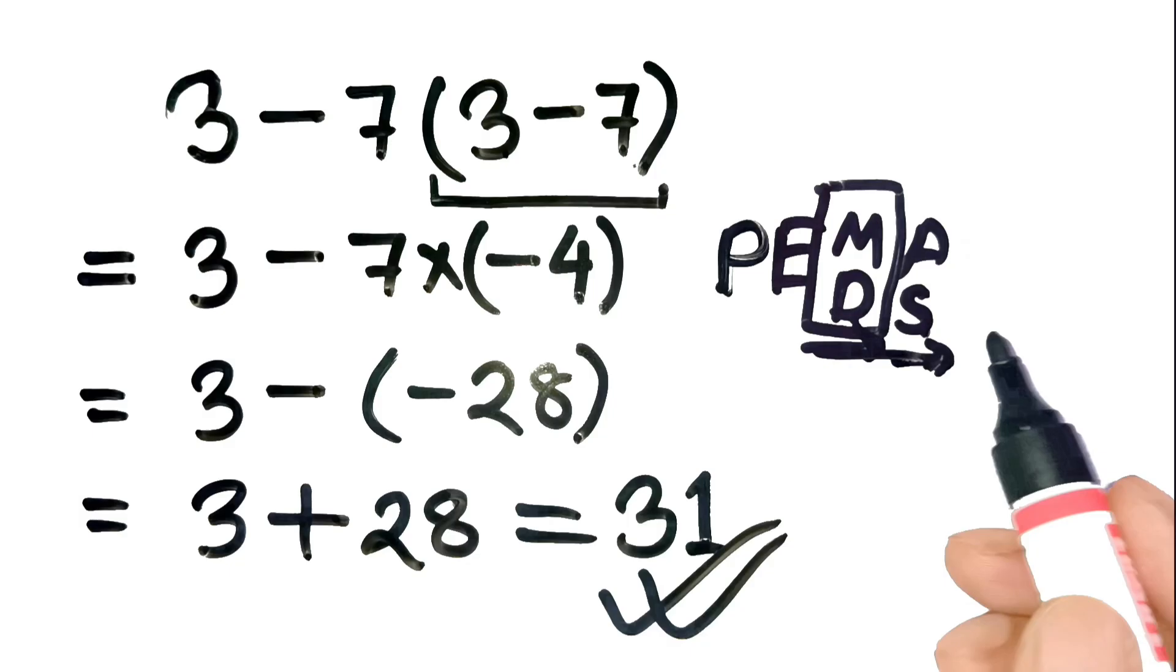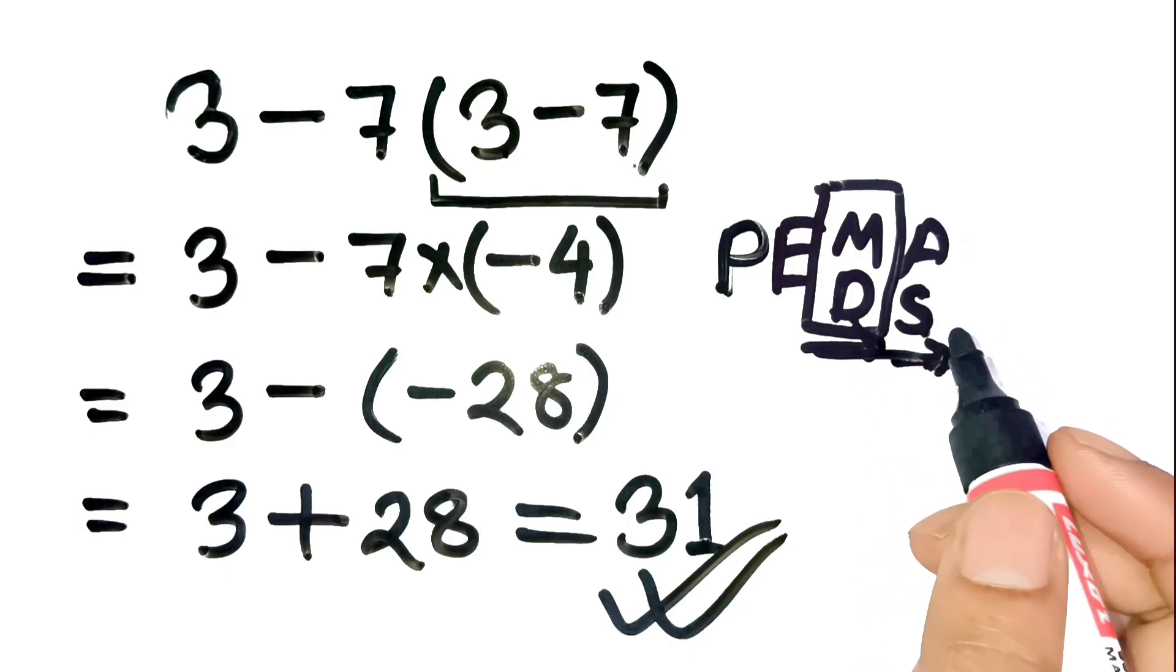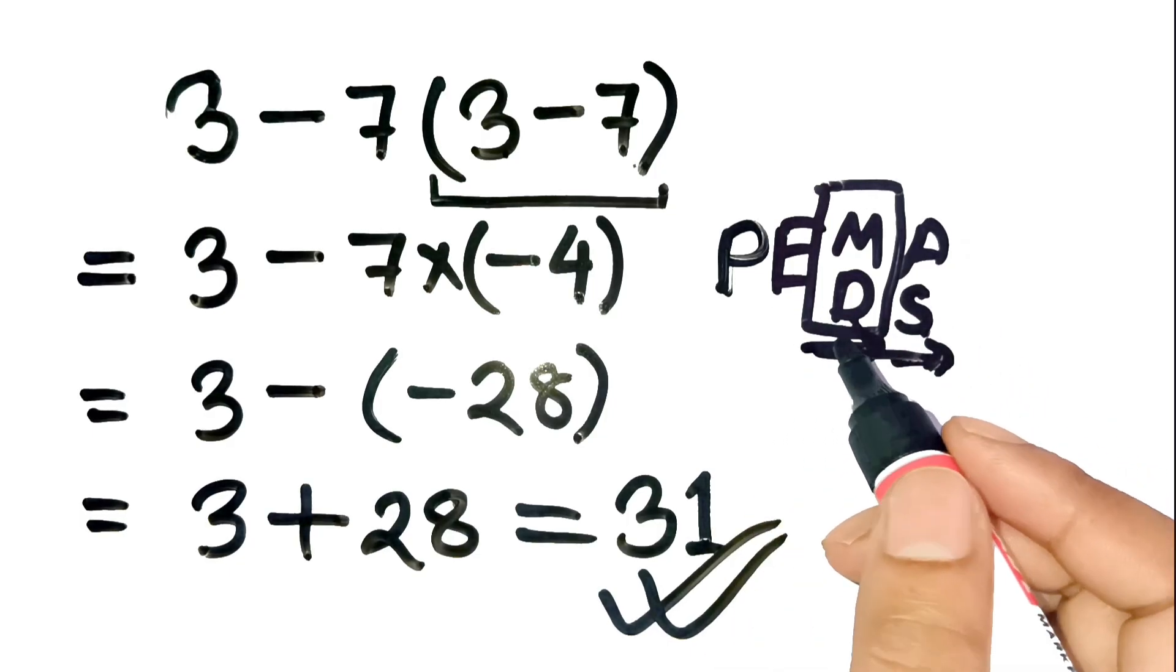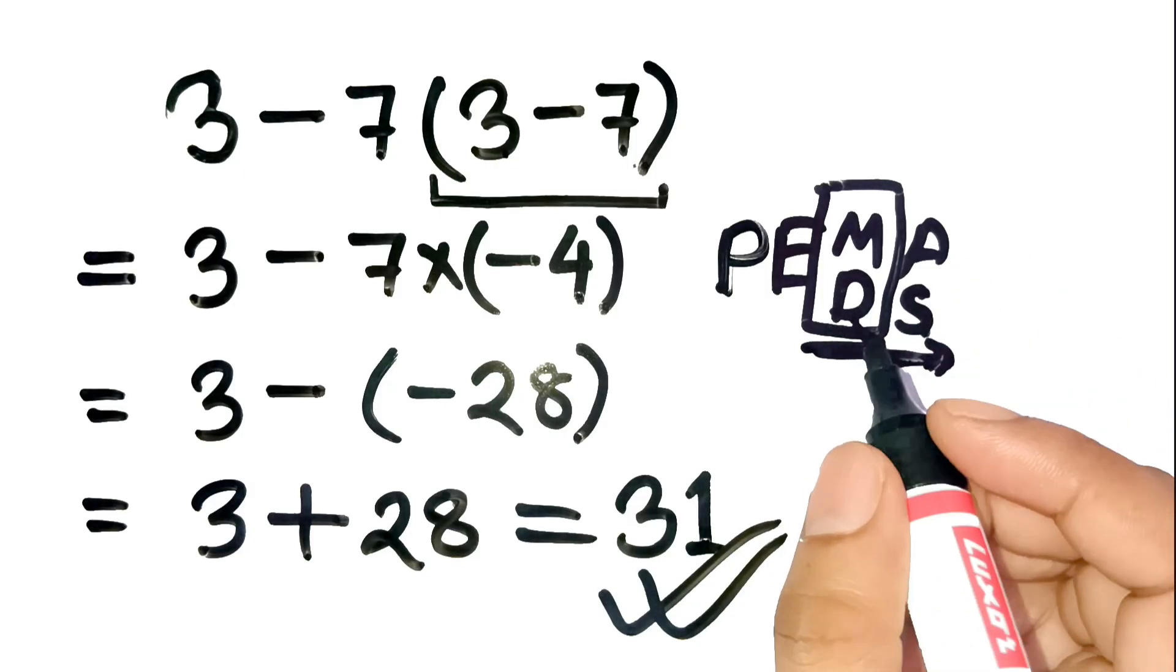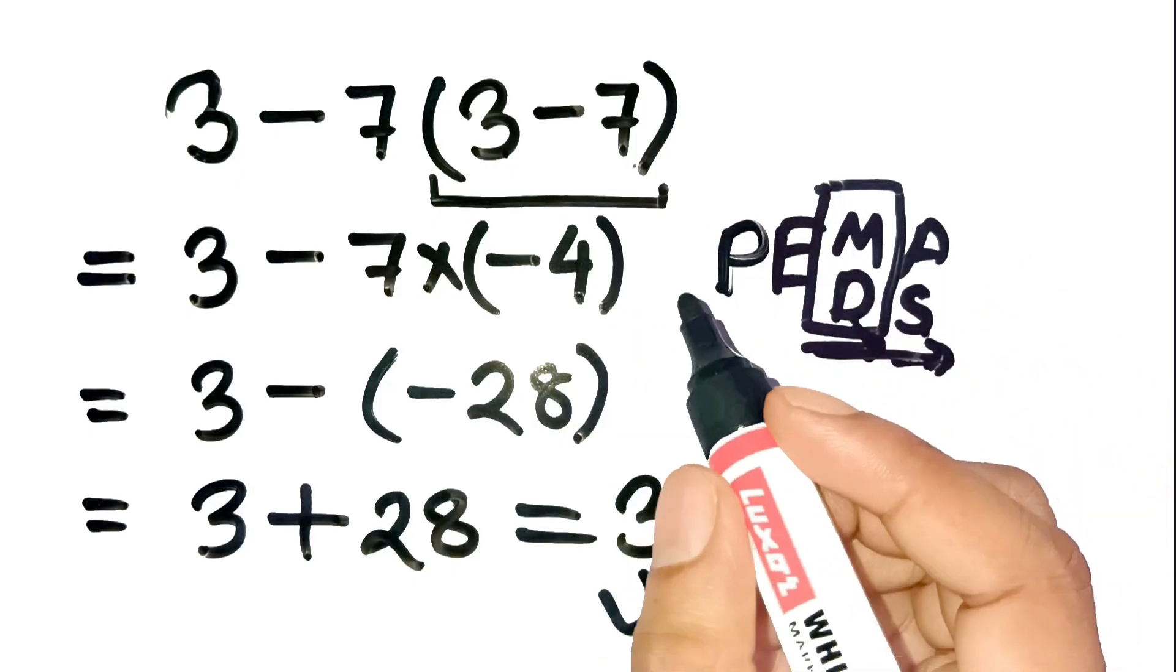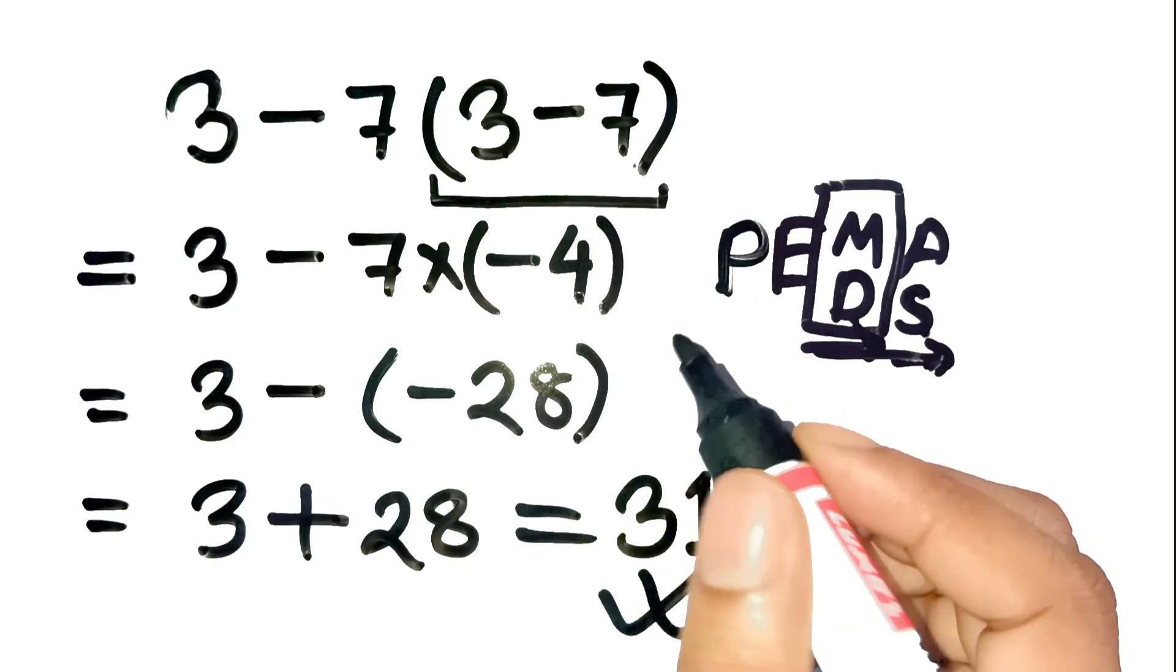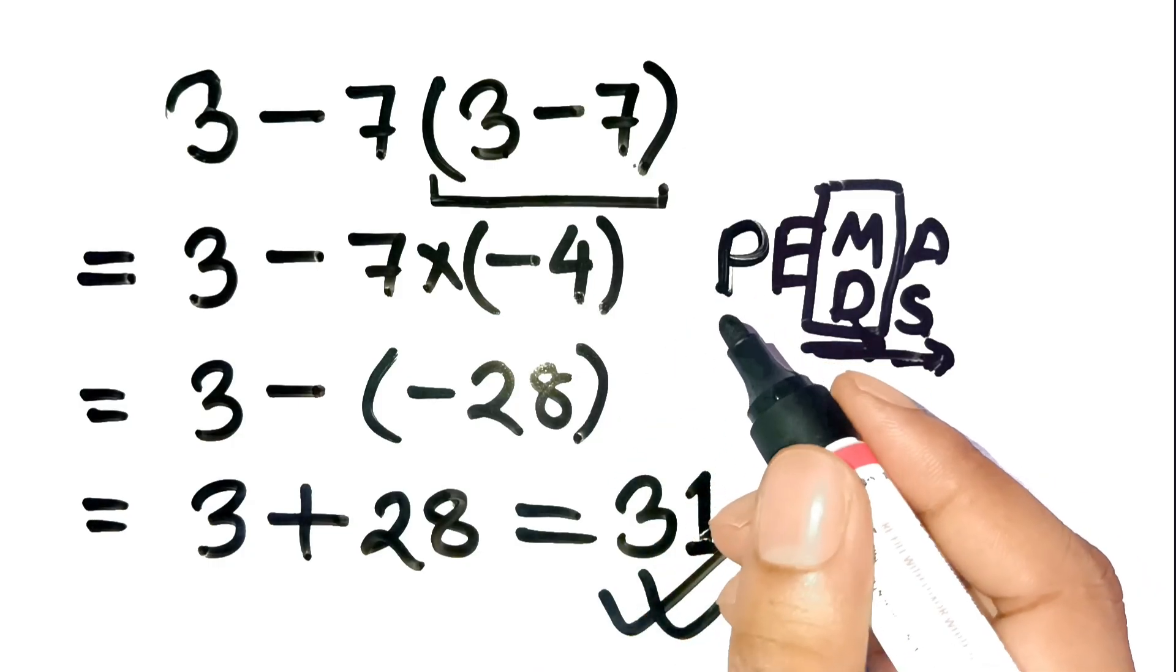But that's why following order of operations carefully is so important. If you don't believe it, try it exactly like this on your calculator. You'll see it gives 31. And if you still have doubts or think your logic makes sense, write it down in the comments. I'd love to read your thoughts. Thanks for watching, and I'll see you in the next Tricky Math Challenge.